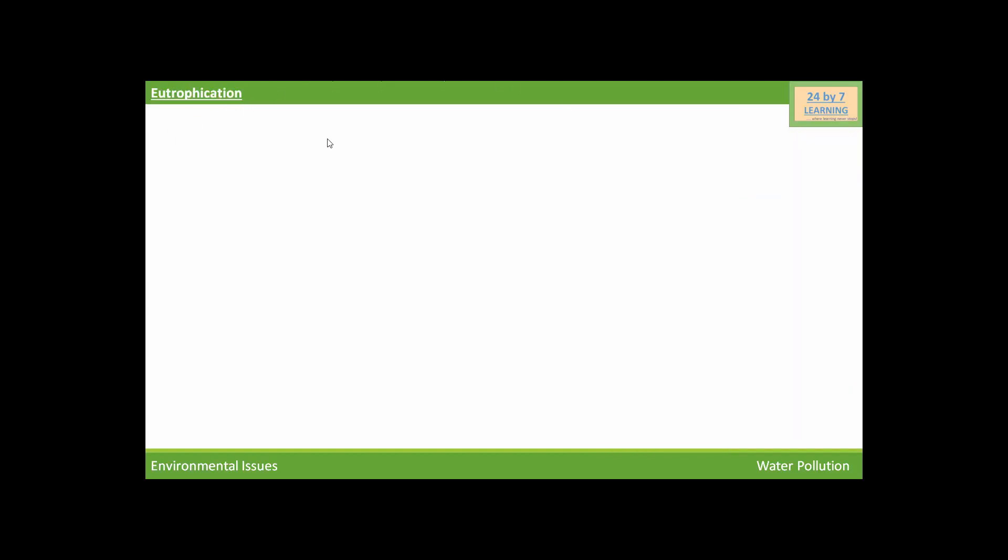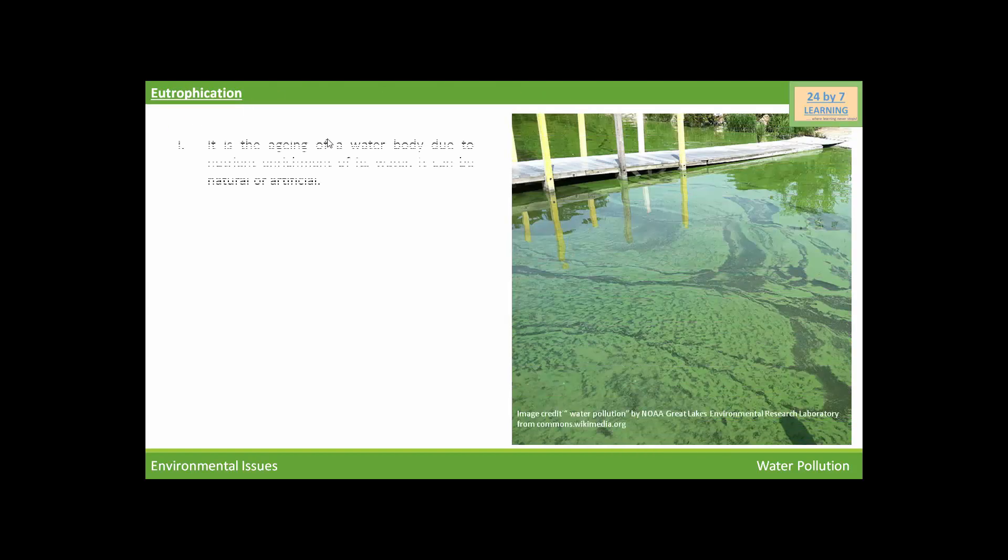Now we will discuss eutrophication. Eutrophication is the aging of a water body due to nutrient enrichment of its water. It can be natural or artificial.